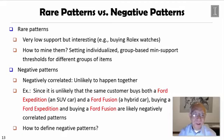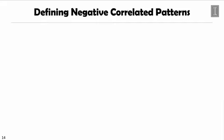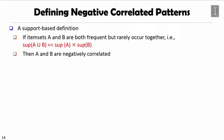The problem becomes how to define such patterns. We may have one support-based definition like this. We say if the item sets A and B getting together their support is far less than support of A times support of B, that means the chance they get together is far less than random. Then we can say A and B are negatively correlated.